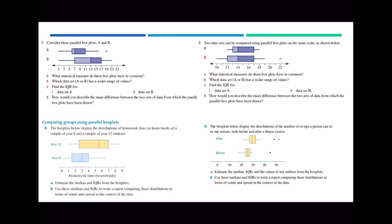I'd like you to answer the practice questions. Questions three and five are from exercise 9D in the year 10 textbook, and questions four and six are from the year 11 textbook. For part D of questions three and five, try to answer as covered in this lesson — talking about it in terms of shape, center, spread and outliers. This is the end of today's video. Hopefully this video helped you out. I'll see you again in the next video. Bye.